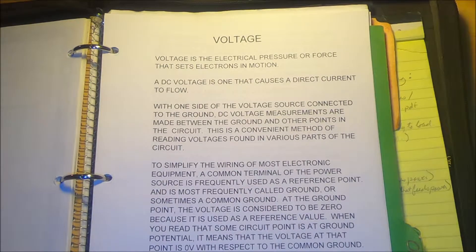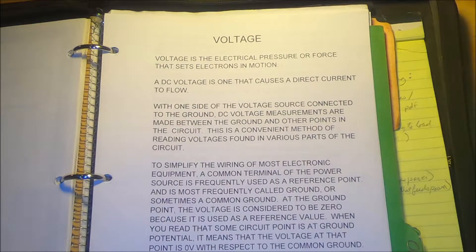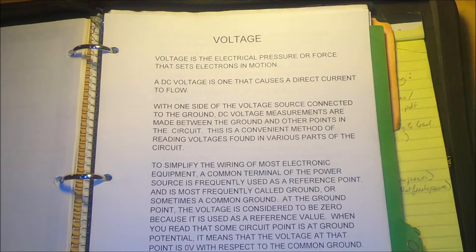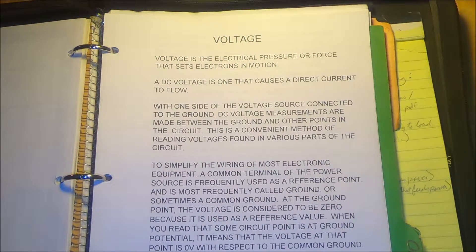To simplify the wiring of most electronic equipment, a common terminal of the power source is frequently used as a reference point, most often called ground or common ground. At the ground point, voltage is considered to be zero because it is used as a reference value. When a circuit point is at ground potential, it means the voltage of that point is zero volts with respect to the common ground. Usually the negative terminal of the battery is connected to the common ground. If you touch a test wire to a motor where there should be a ground and a light comes on, that means the ground is broken at that point and should be checked.